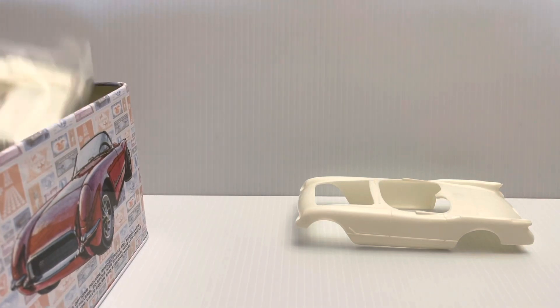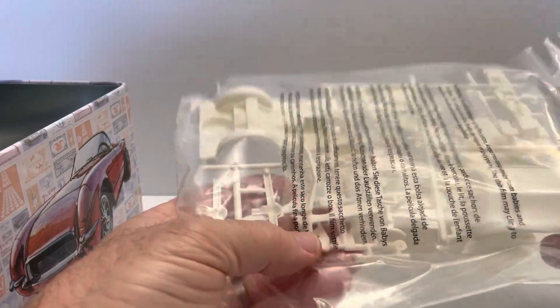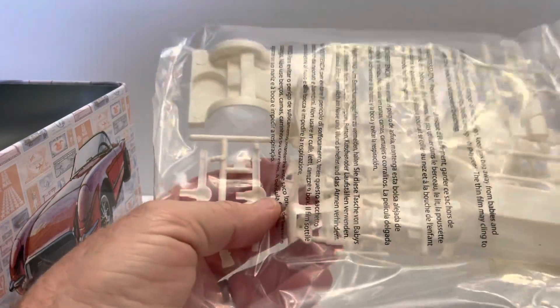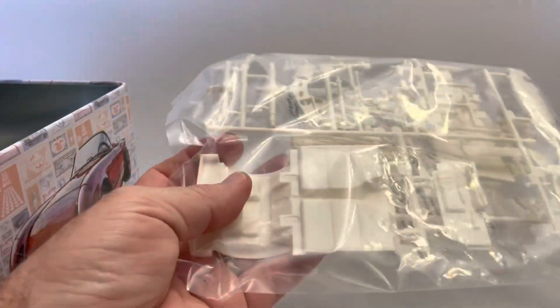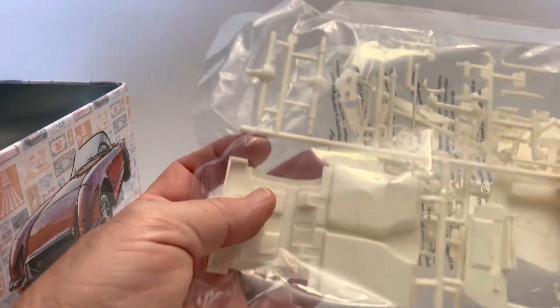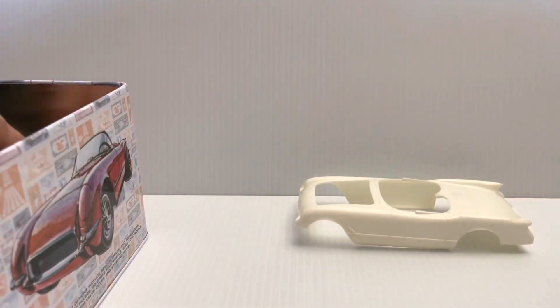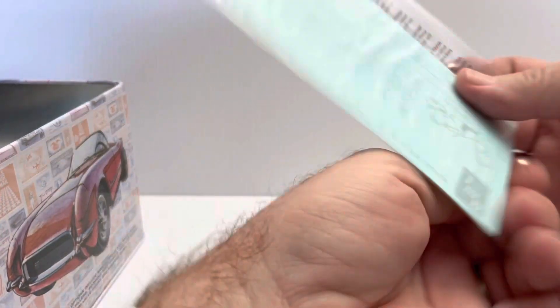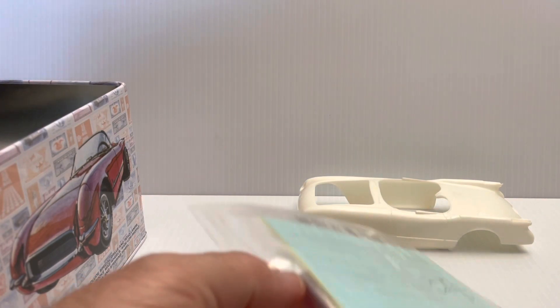Here we have the last package. We have the door cards, convertible top, floor pan, suspension, and rear end components. All that looks nice. I'm really pleased so far with what this kit includes. Let's cut open the decal sheet and see what we have in there.